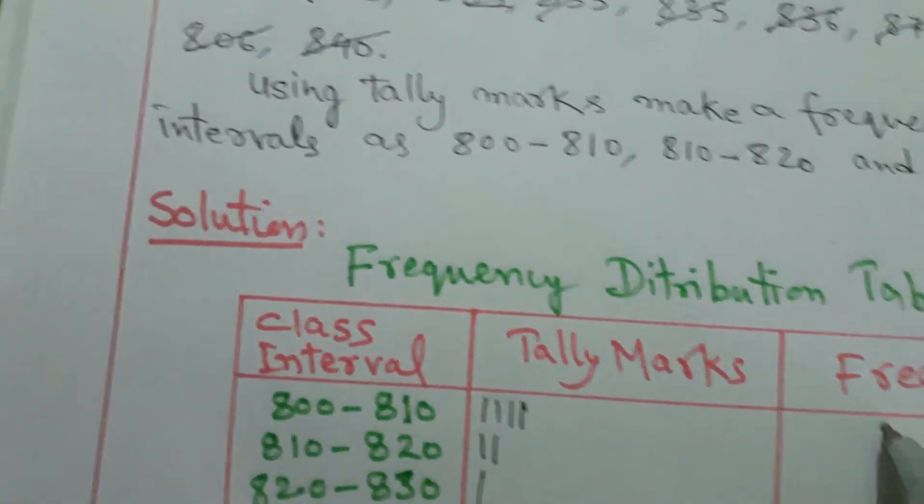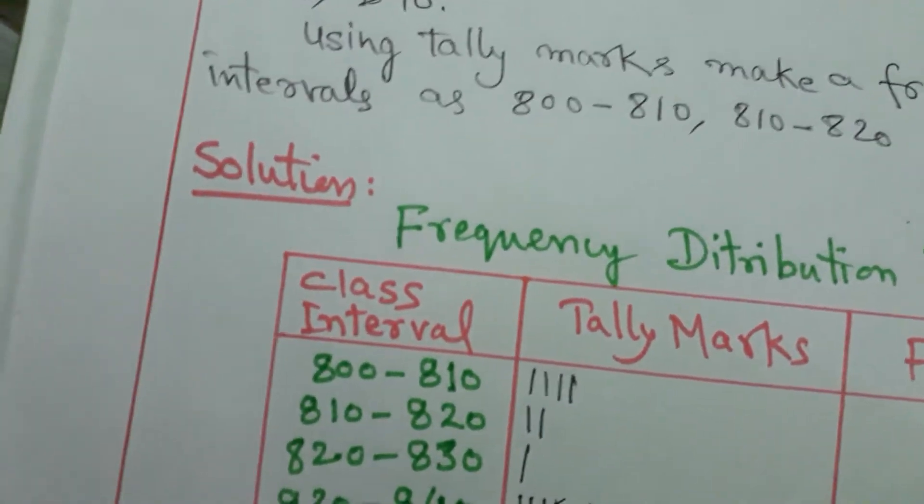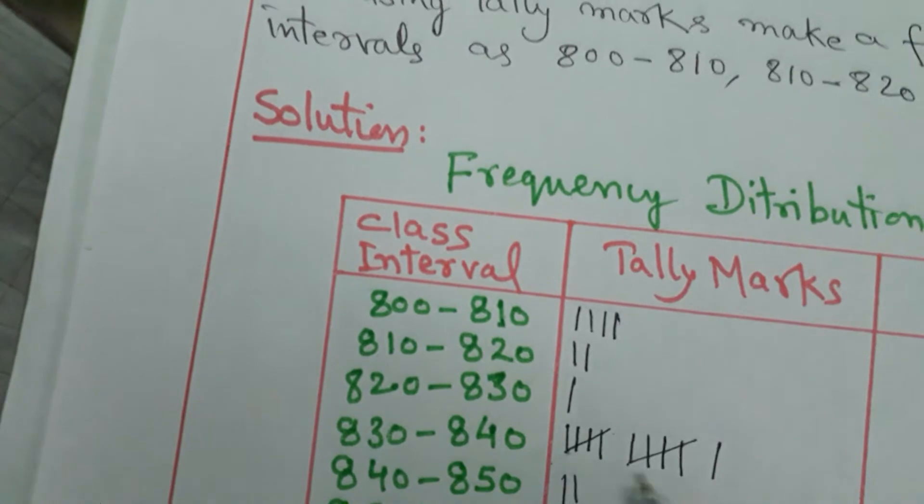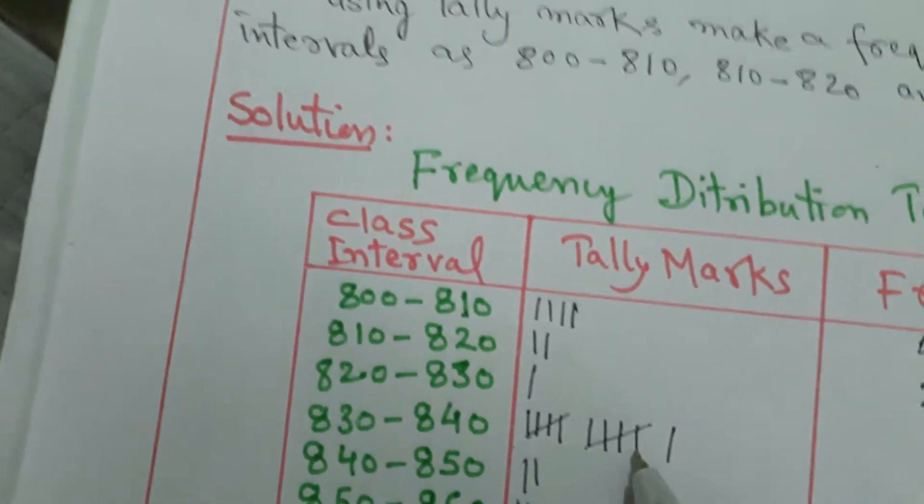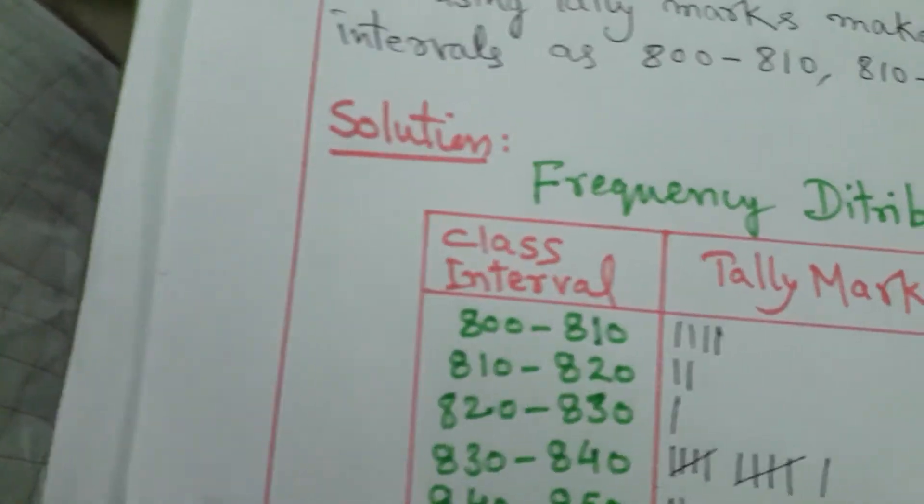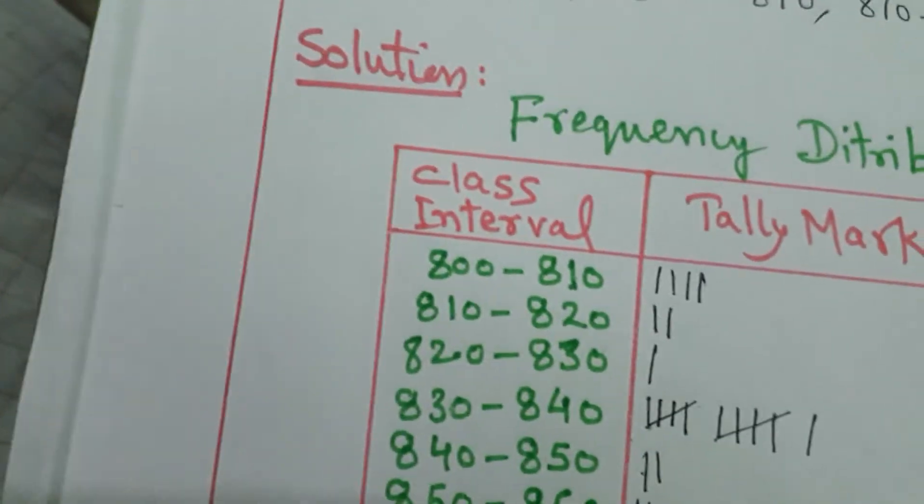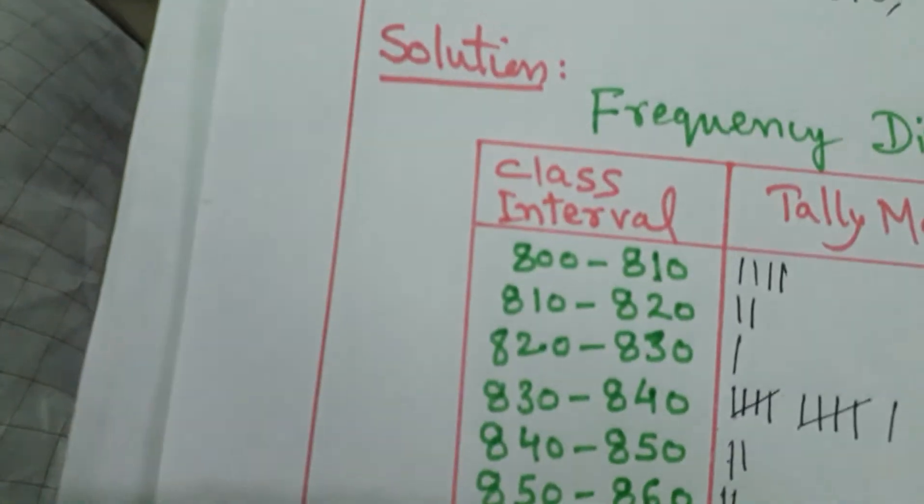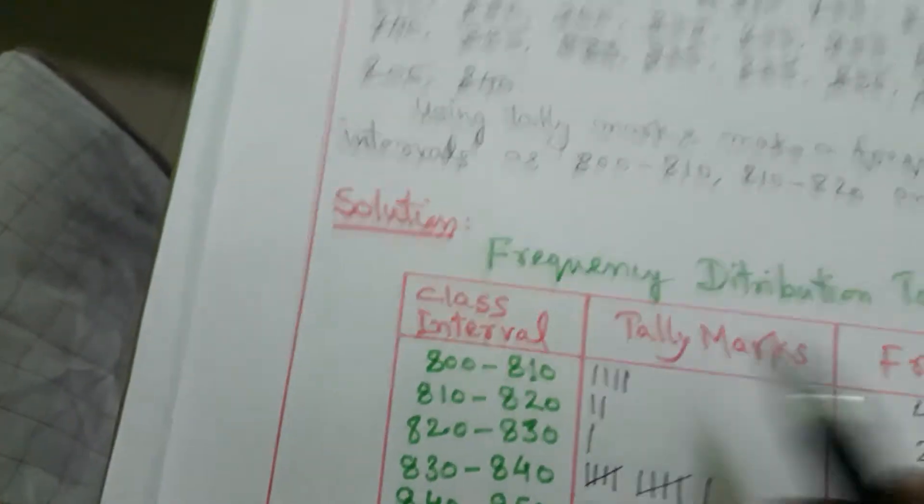So this is the tally mark. One, two, about five. Frequency is here, one, two. Now count it. One, two, three, four, you write here four. One, two, three, four, five. One, two, three, four, five, ten. Five plus five is ten, and eleven. One, two. Two, two. One, four, one.